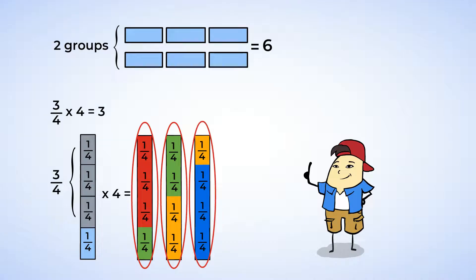And just like with the example above, we can take the product, in this case three, and divide it by one of the factors, four, and get the answer as the other factor, three-fourths. Cool, huh?